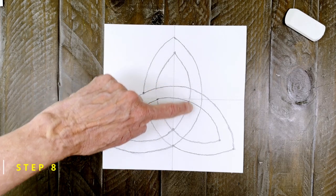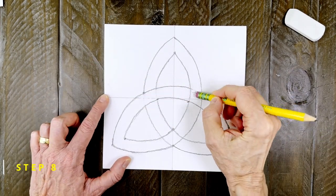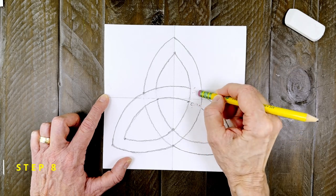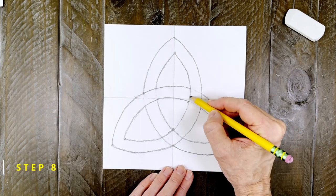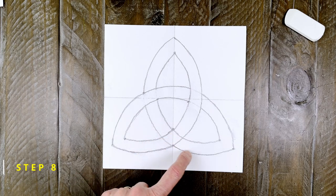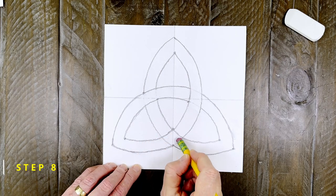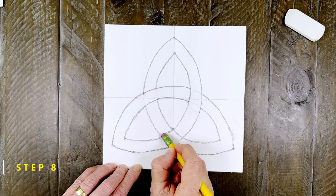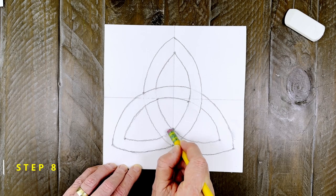Step number eight. And then erase these two lines. And finally erase these two lines. Double check things before you start to trace. Again, a Celtic knot should look like one continuous loop.